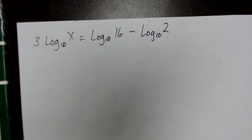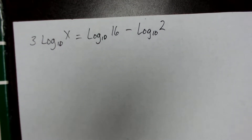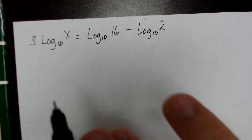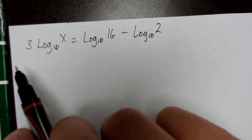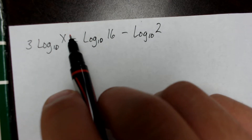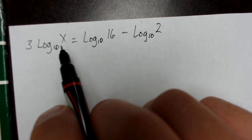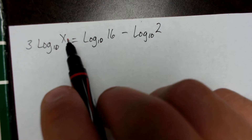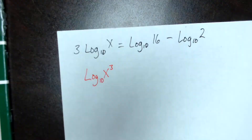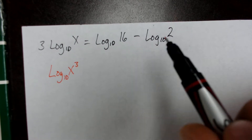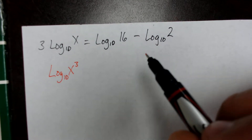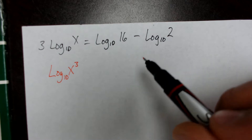They threw one of these at your last test, but we have two different logarithmic rules that we use. The first is that if we have a number being multiplied by a logarithm, we can change that number to become the exponent of the logarithmic argument. So three times log base 10 of x can be rewritten as log base 10 of x cubed. That's the first rule.